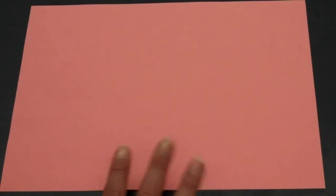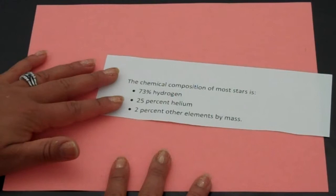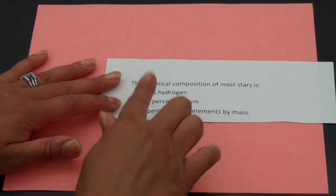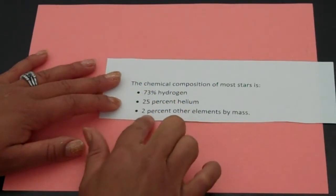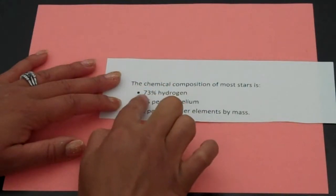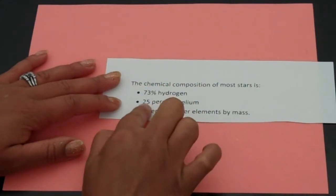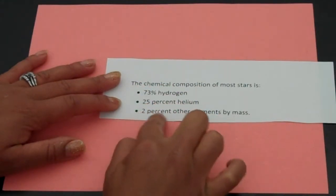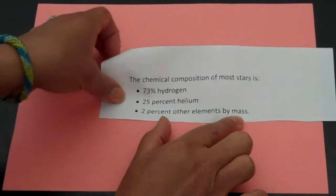So first of all, stars are made up of chemicals. Generally, stars follow this pattern: about 73% hydrogen, 25% helium, and 2% other elements by mass.